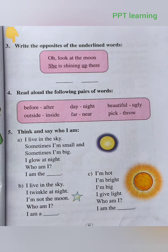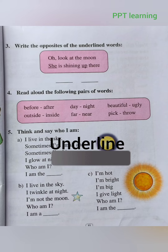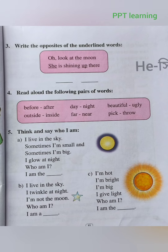Activity number 3: write the opposites of the underlined words. Opposite — she; opposite — he.